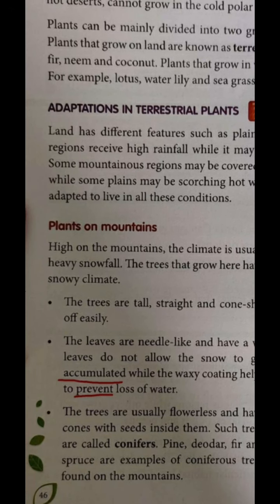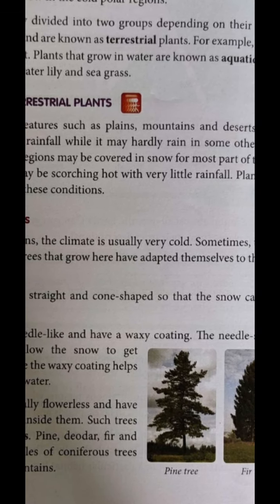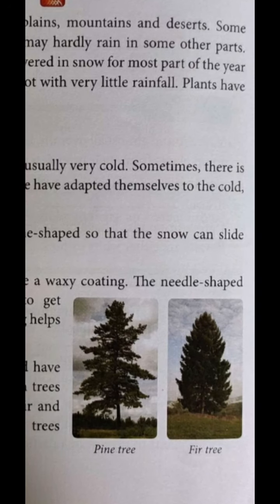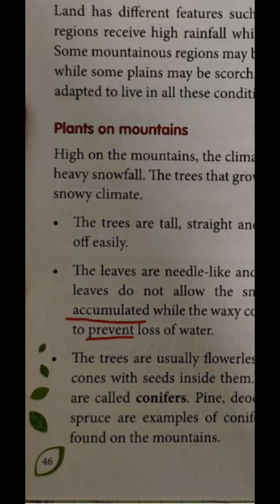The first point: trees are tall, straight, and cone-shaped so that the snow can slide off easily. If you have ever seen a Christmas tree, the Christmas tree is present on the mountain and that is why its shape is like a triangle — that is known as a cone shape. So plants that grow on mountains are straight, tall, and cone-shaped, meaning triangle-shaped, as you can see in the pictures.